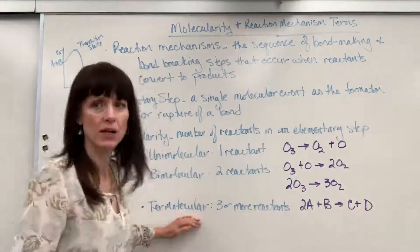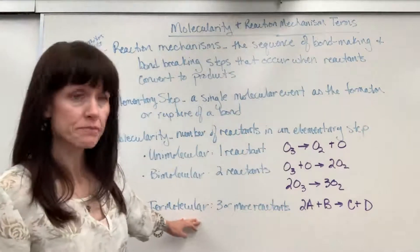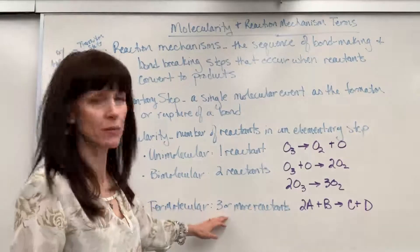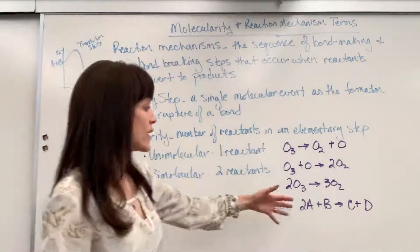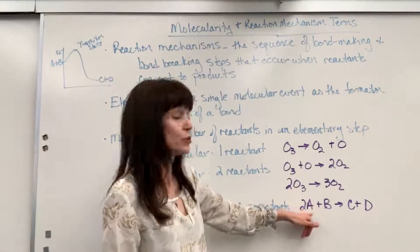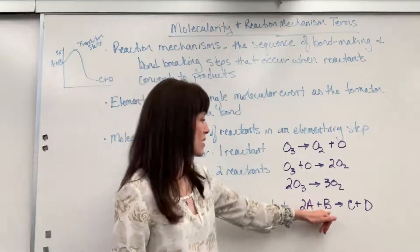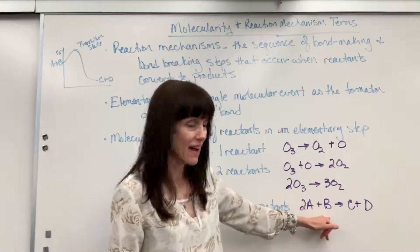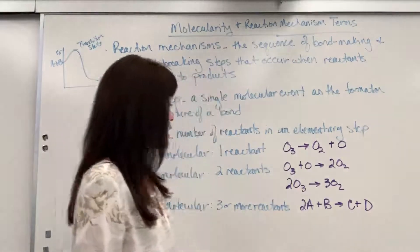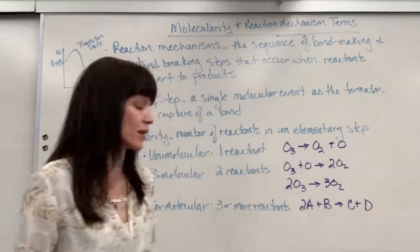And then termolecular. Now this is unusual. Termolecular is when you have three or more reactants. I gave a generic example. You have two of compound A plus compound B. So I have one, two, three reactants to form C and D. So that would be considered termolecular.